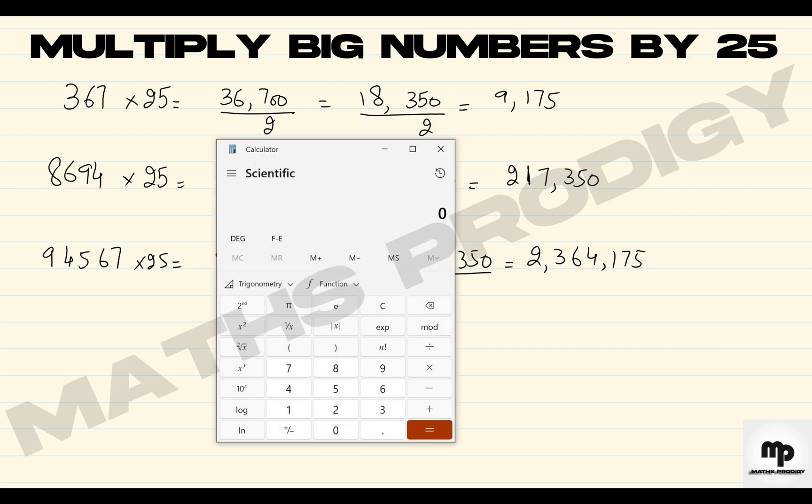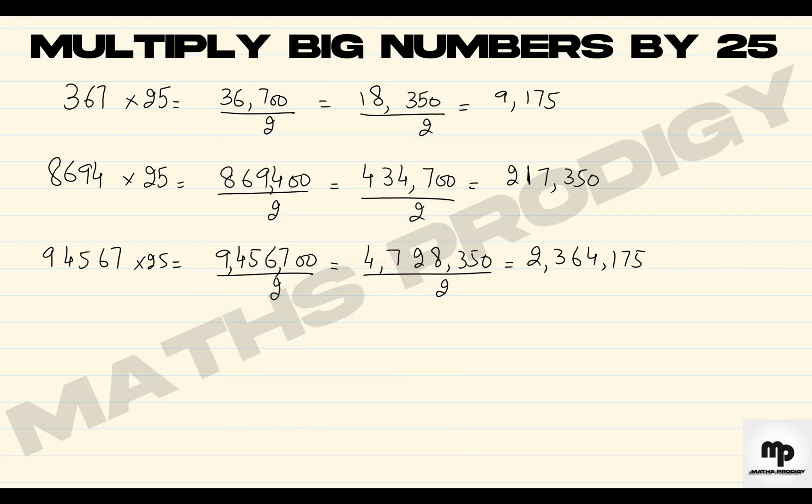Let's check this on the calculator. 94,567 times 25, voila! 2 million, 364 thousand, 175. So you see that we can multiply any big numbers by 25 in a matter of seconds.